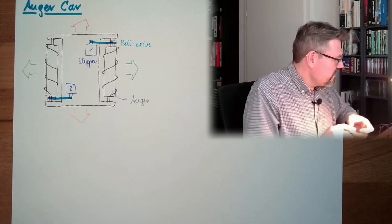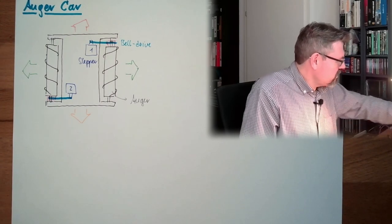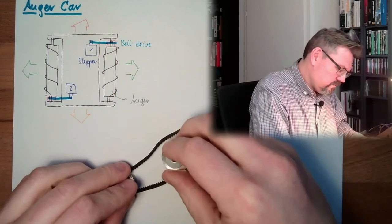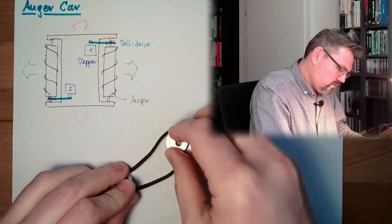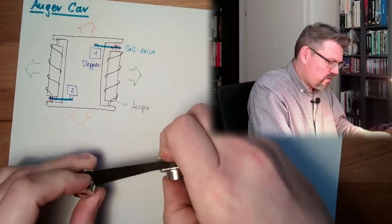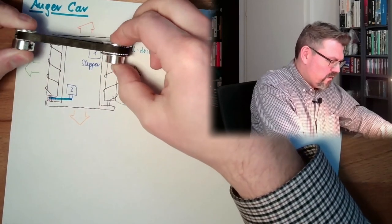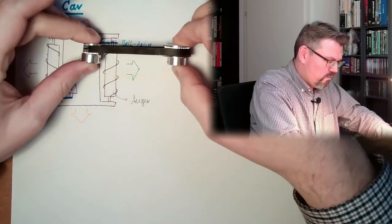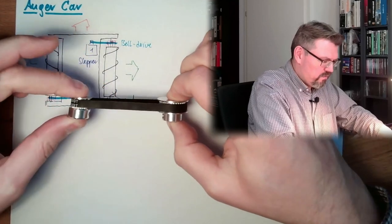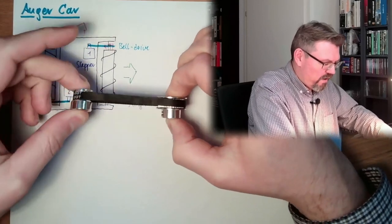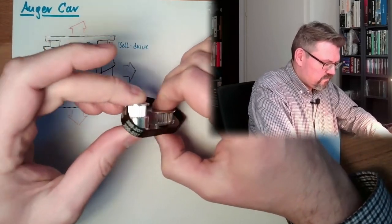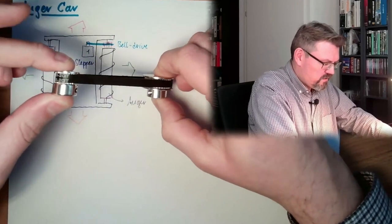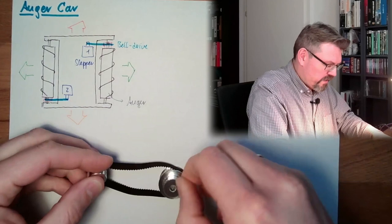I even bought already here some parts. This is the belt drive I want to use. The belt drive, one at the shaft of my auger, one at the stepper motor. So I have to somehow think how I can regulate the tension or adjust the tension.